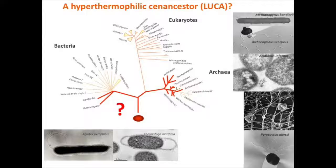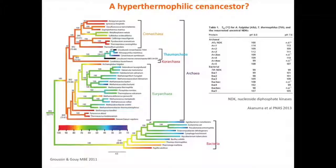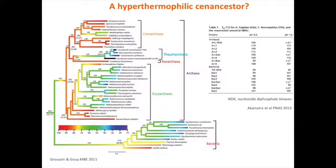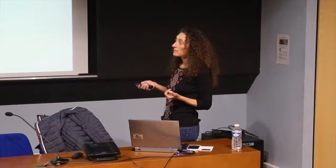Some researchers in France used the GC content of ribosomal RNAs to infer the temperature at which the last common universal ancestor lived. In the case of archaea it's clearly a hyperthermophile, and in bacteria a thermophile or possibly hyperthermophile. Surprisingly, their models pointed to a hyperthermophilic ancestor for the two prokaryotic domains but to a mesophilic ancestor for the common ancestor of the two domains — something difficult to explain biologically.